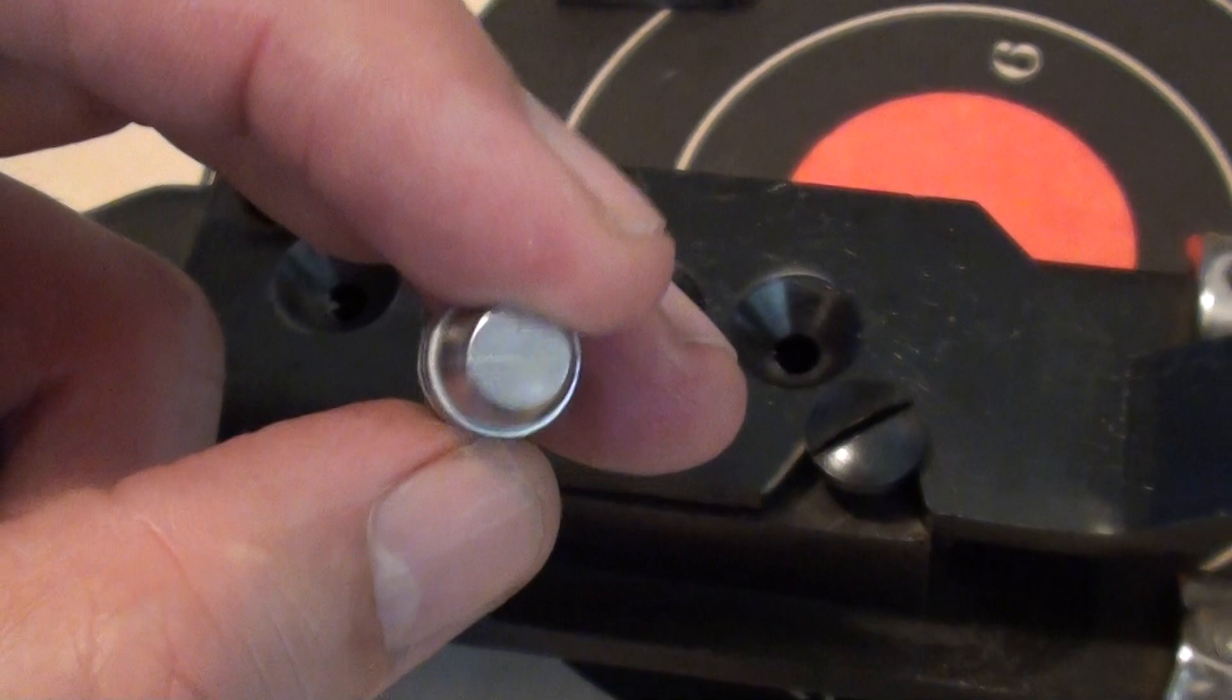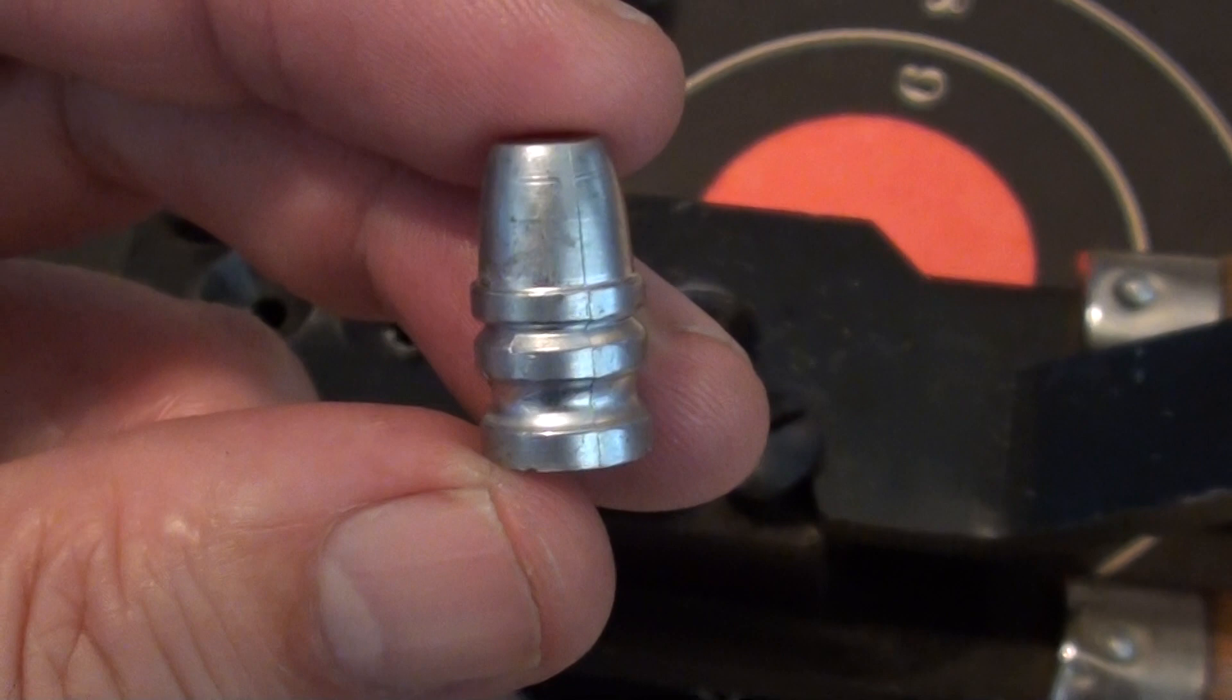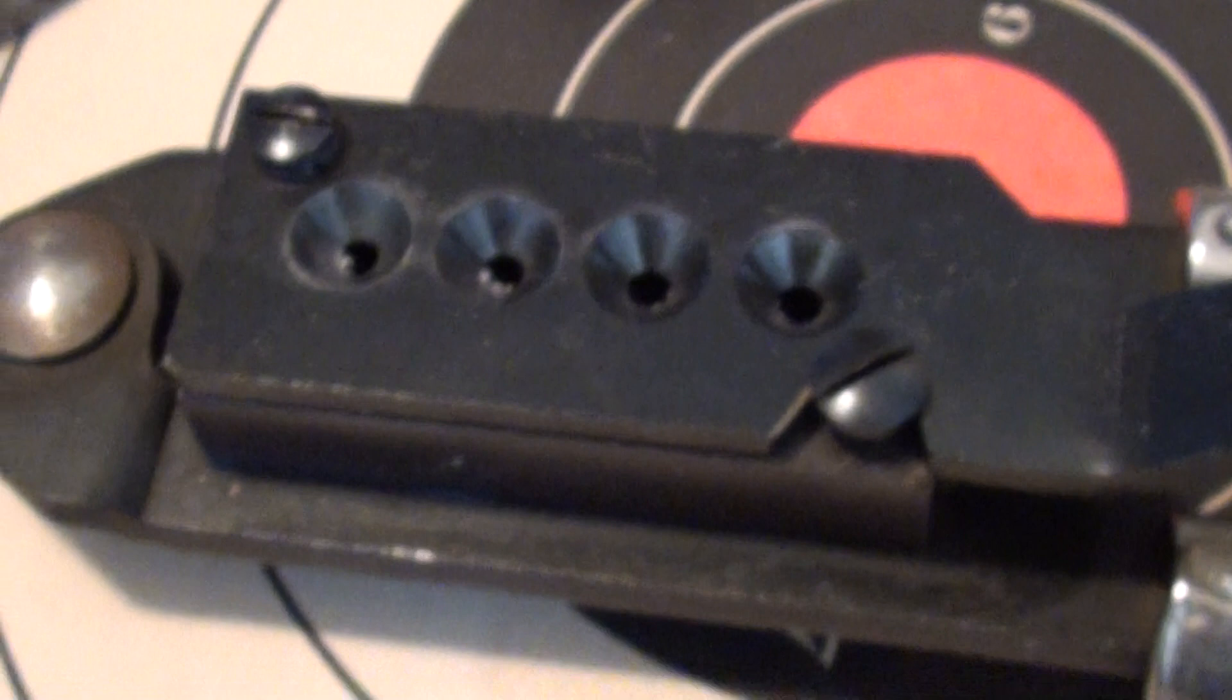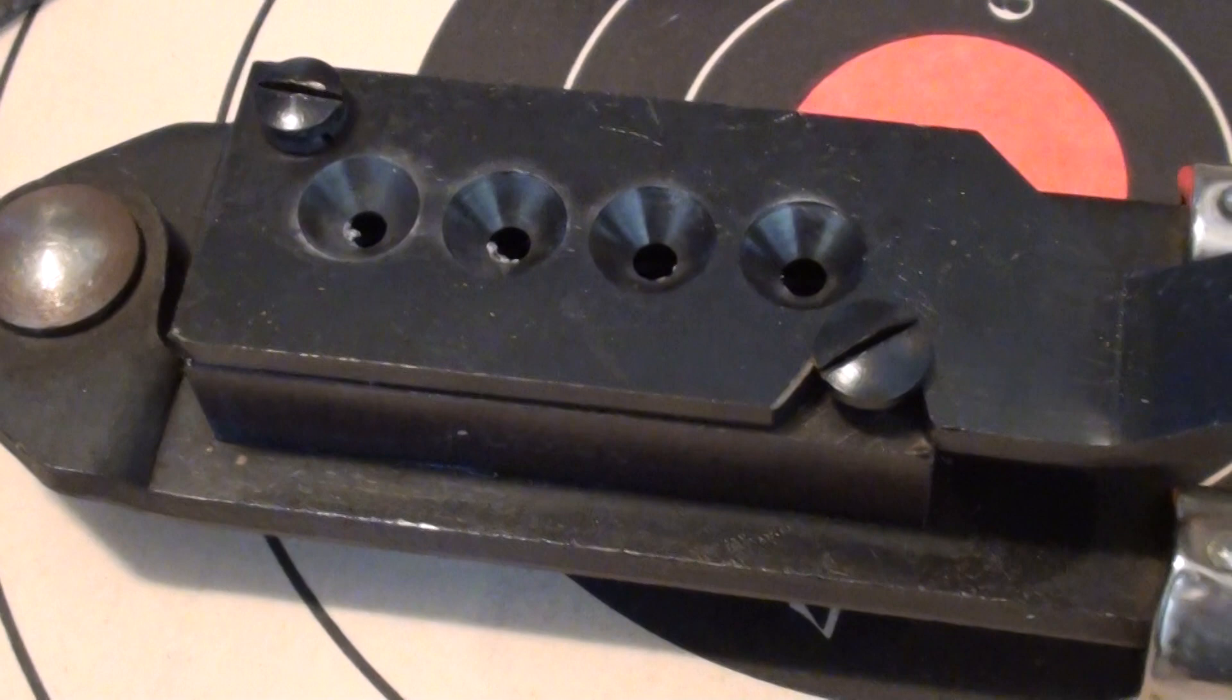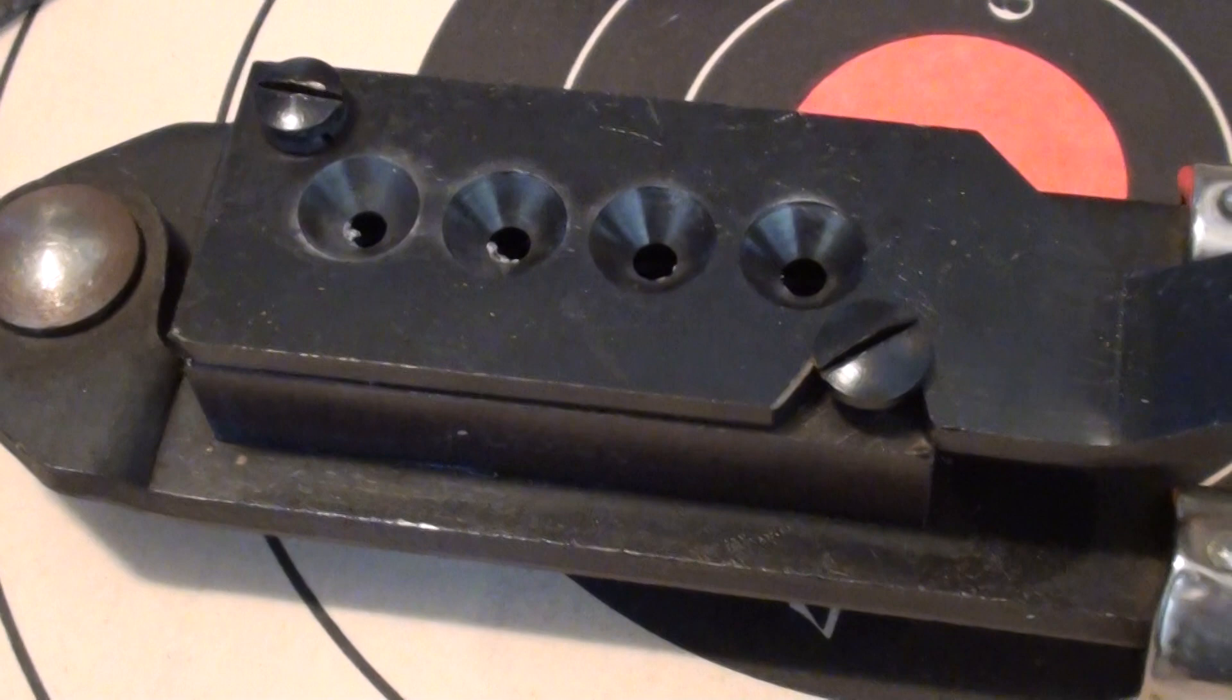So YouTubers out there, if you would like to give the Keith-style bullets a try, you can buy these molds in 4-cavity or 2-cavity and give them a try. You might like them quite a bit. It's difficult not to like Keith, authentic Keith bullets for revolvers, because they work so well.